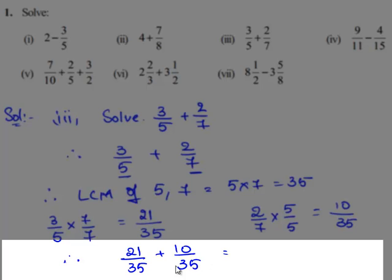Since both the fractions have common denominators we can directly add their numerators. So 21 plus 10 gives 31 divided by the common denominator that is 35.